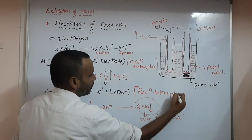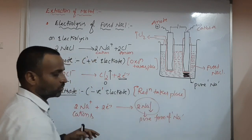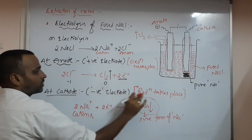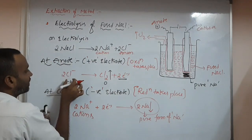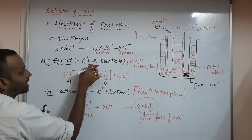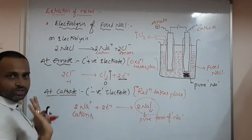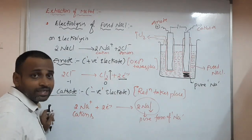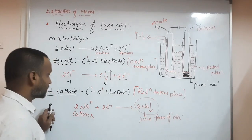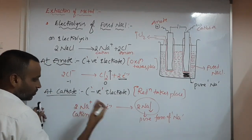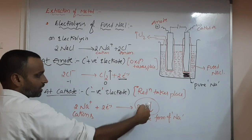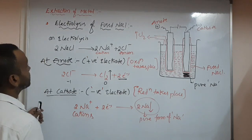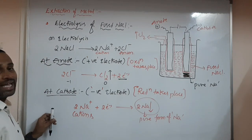At anode: Cl⁻ ions will move because anode is positive; Cl⁻ loses electron and converts to Cl₂ — chlorine gas is liberated. At cathode: Na⁺ will take electron and convert to sodium. This is the electrolysis of fused NaCl.